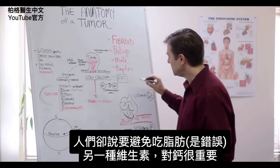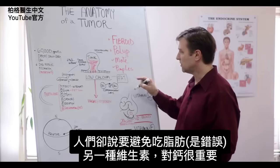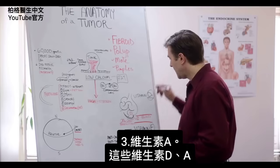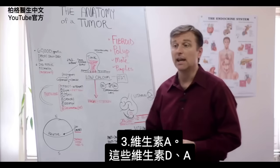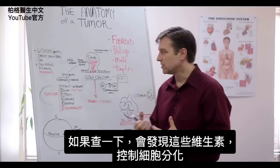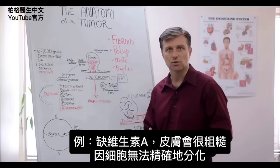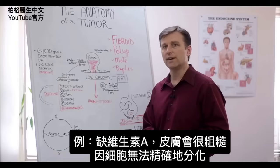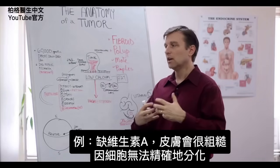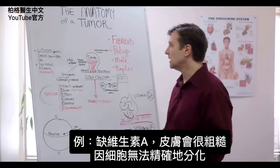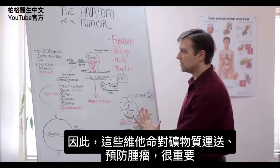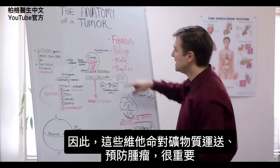There's also another vitamin essential for calcium that I forgot to mention: vitamin A. Vitamins D and A control what's called the differentiation of what cells turn into. So if you're deficient in vitamin A, for example, you'll have all this rough skin because the cells can't be duplicated exactly as they should. These vitamins are very important in the transportation of minerals and the protection against tumors.